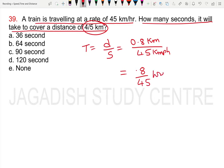But the options are in seconds, so we need to convert. Take 0.8 by 45 and multiply by 60 for minutes, then multiply by 60 again for seconds. Now we can cancel and simplify.